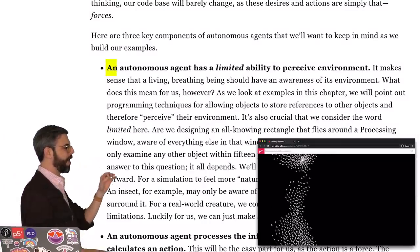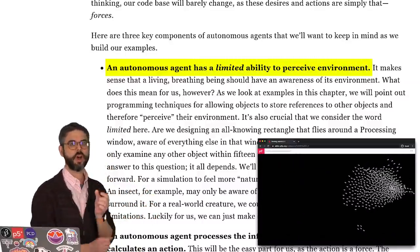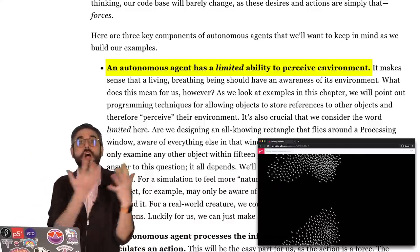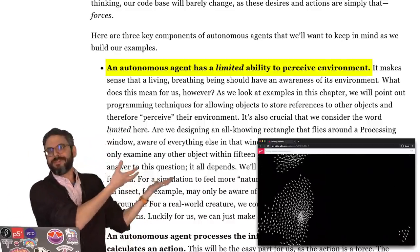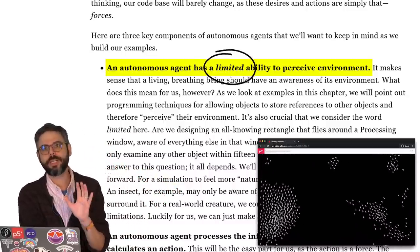Number one, an autonomous agent has a limited ability to perceive its environment. So it has some kind of sensors built into it. It knows where it is in relation to other things in the P5 canvas itself, because that's what we're working with. But that word limited is really critical.